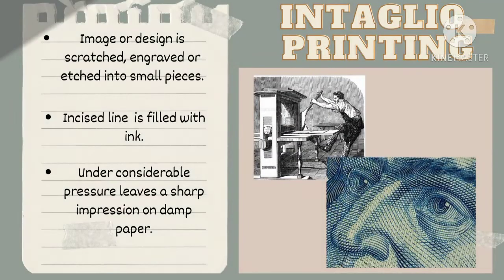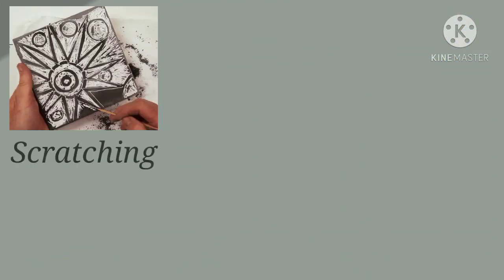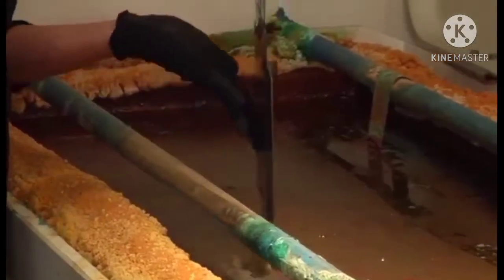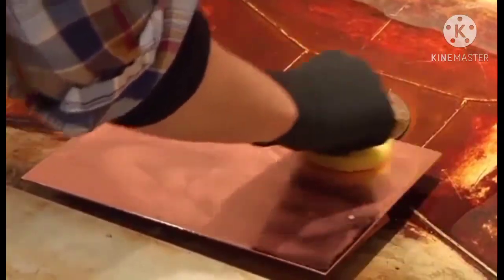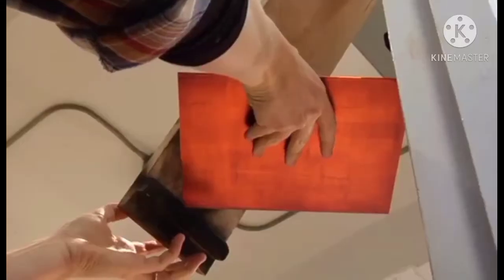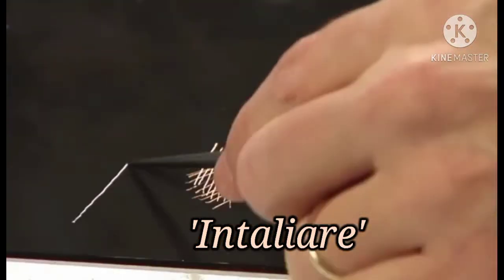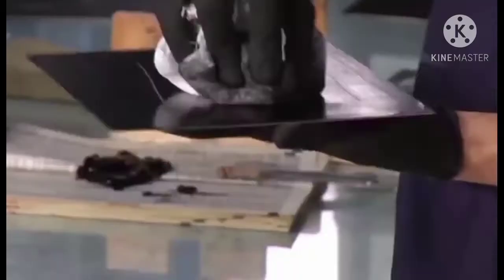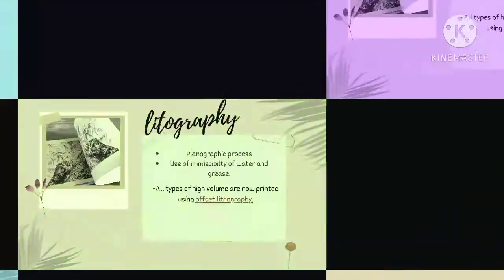Intaglio printing is an image or design that uses the techniques of scratching, engraving, or etching into a metal plate. The incised line holds the ink which, under considerable pressure, leaves a sharp impression on damp paper. The word intaglio comes from the Italian word meaning 'to cut,' referring to the method of cutting or incising lines into a surface to produce an image.